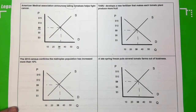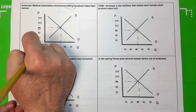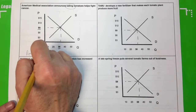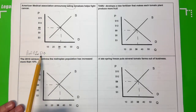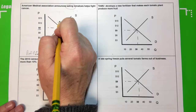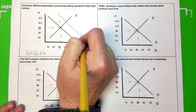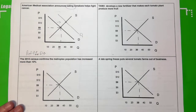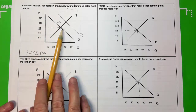Scenario one: the American Medical Association announces that eating tomatoes helps fight cancer. Eating it means consuming, so this looks at the behavior of the consumer — demand. This would change our preferences for tomatoes; knowing it helps fight cancer means our preferences are going to increase. So demand for tomatoes increases at all price points, and we're going to see these quantities increase. Graphically, we show an increase by shifting the demand curve to the right, and we label that curve D-sub-one.